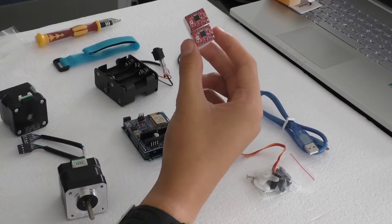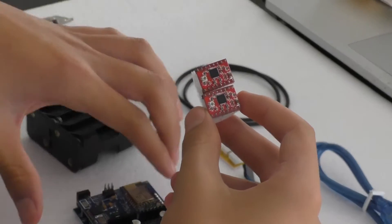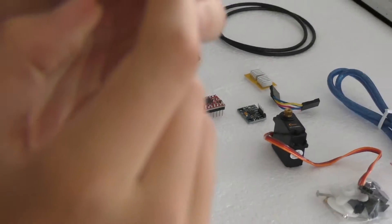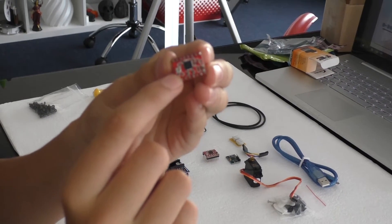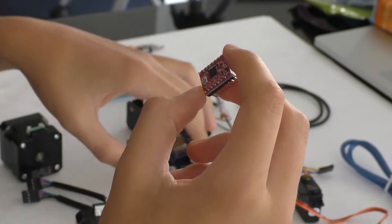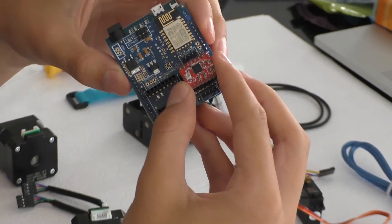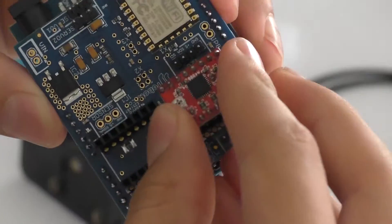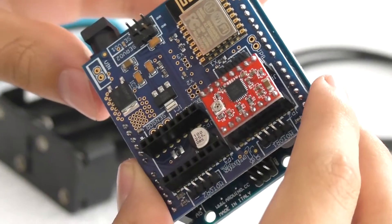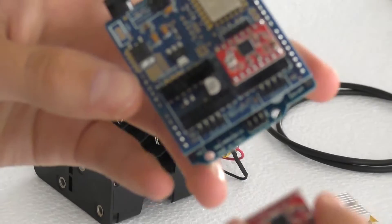Next, we're going to attach the stepper motor controllers to the brain. Making sure that the adjustment screw is facing towards you, you need to place it on the board. And the same with the other one.